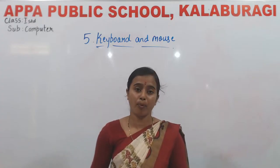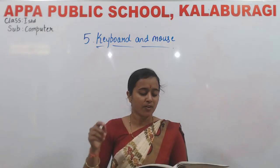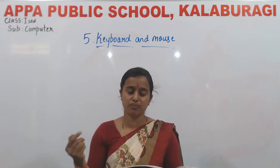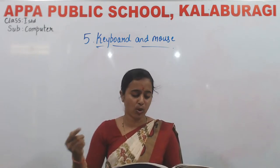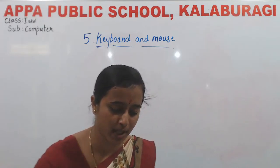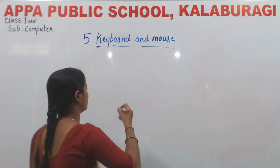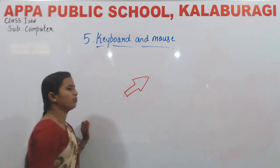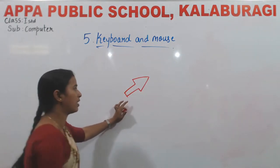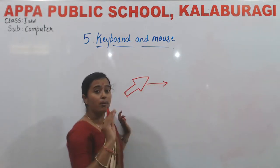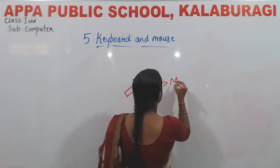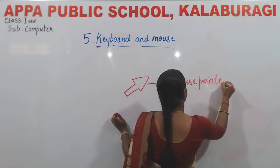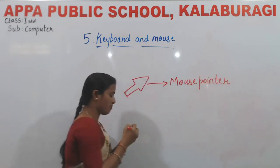Next is mouse pointer. When the mouse is moved on the mouse pad, a small arrow moves on the screen. This small arrow is called the mouse pointer.